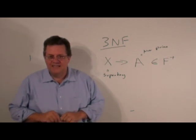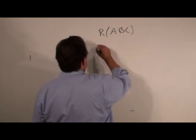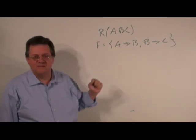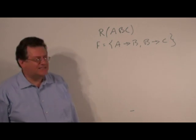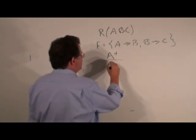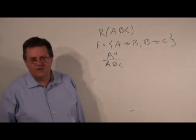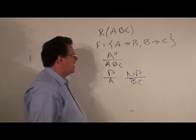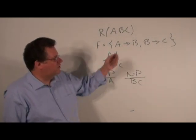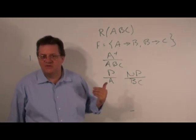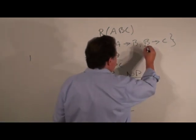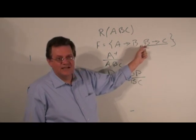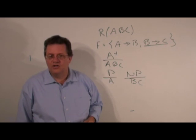Now let's take a look at an example. We have R(A, B, C), and F: A functionally determines B, B functionally determines C. In this case, the key is A, so A is prime. Non-prime attributes would be B and C. We've got a singleton attribute key, and looking at the functional dependency B→C, we have a non-prime on the right-hand side. The left-hand side is not a super key, therefore this is not in third normal form.